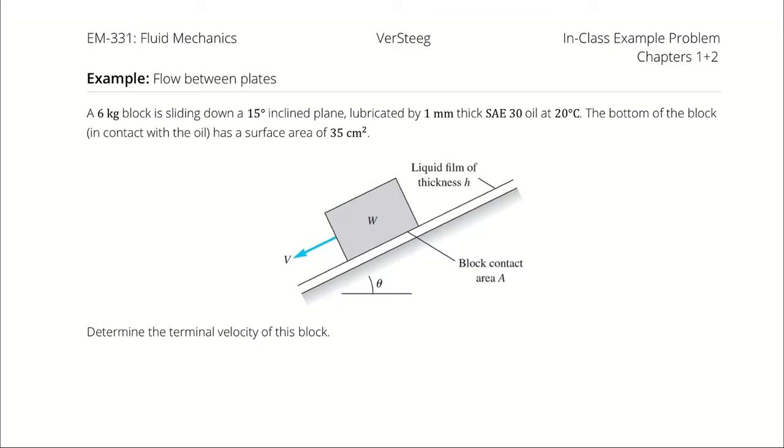A 6 kg block is sliding down a 15 degree incline plane. It's lubricated by a 1 mm thick layer of SAE 30 weight oil at 20 degrees Celsius. The area of the bottom of the block, that is the side that is in contact with the oil, has a surface area of 35 square centimeters.